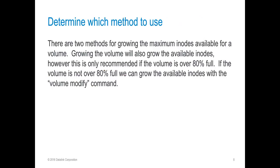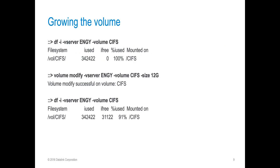So how do we correct this? We have two methods to increase the amount of inodes in a volume. We can either grow the volume, as new inodes will be created when the space is added, or we can grow the available number of inodes with the volume modify command. The current recommendation is to grow the volume only if the volume is over 80% full. Otherwise, we should just increase the inode count. This can be done from either OnCommand or from the CLI. I wanted to show you the CLI here so we can verify the inode count before and after the growth.